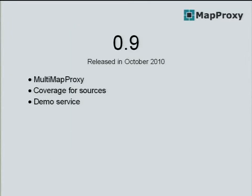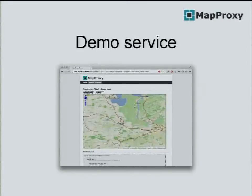With version 0.9, we added MultiMapProxy, which is a tool to run multiple MapProxy configurations in the same instance of MapProxy — so if you want to run different WMS services, you don't have to start up multiple MapProxy instances. We also support coverages for sources, and we added the demo service, which gives you the ability to easily check all your configured layers with a simple OpenLayers client.